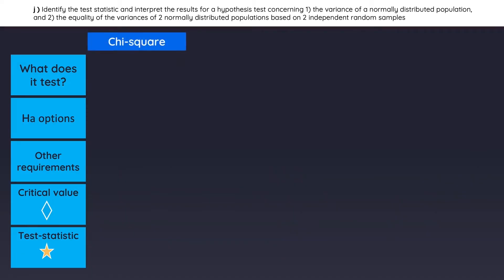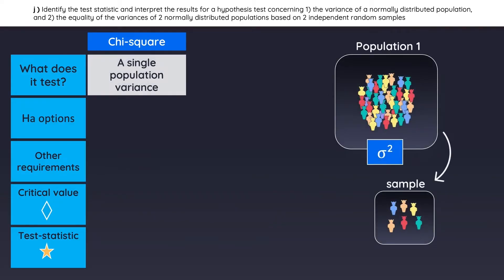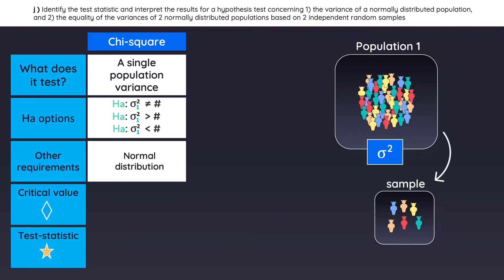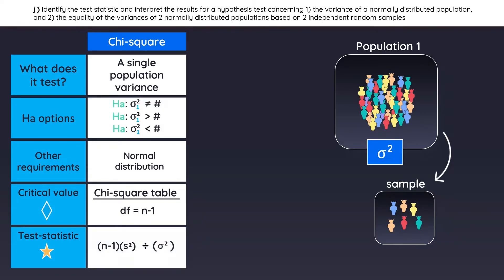Now let's talk about the chi-squared test. This is used when you have one population and you want to make assumptions about its variance. These are the three possible alternative hypotheses — you are simply stating that the variance could be equal to, greater than, or less than some predicted value. The population must also be normally distributed. The critical value is found on the chi-squared table using the degrees of freedom, and the test statistic is found with this formula, which is based on the sample variance and the population variance.